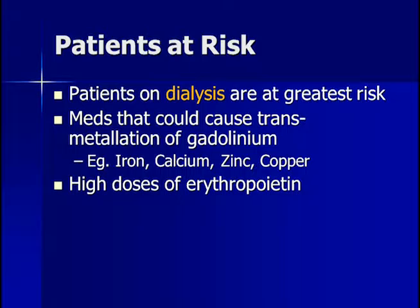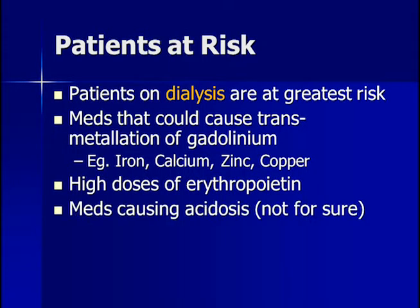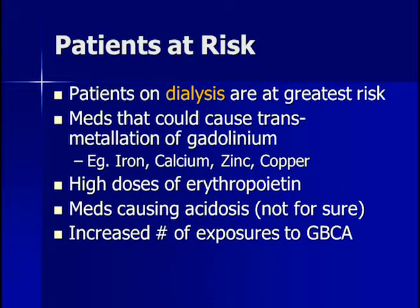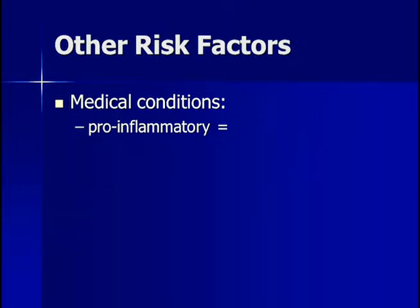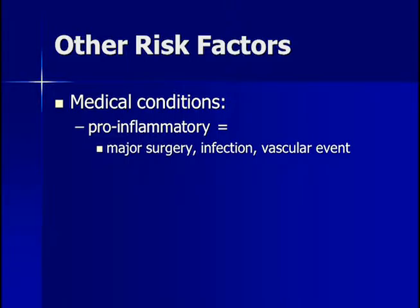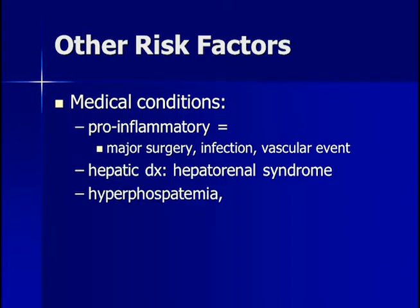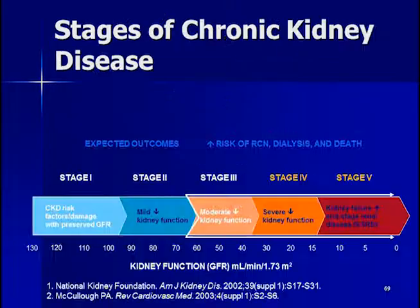Patients with high doses of erythropoietin, patients with acidosis, the number of exposures to gadolinium, and the dose given may increase dissociation of the chelate from gadolinium. Other risk factors for NSF include pro-inflammatory states such as recent surgery, infection, or vascular events such as heart attack or stroke, hepatorenal syndrome, hyperphosphatemia, and acidosis. Just as with CT, we are most concerned with patients in stages 3, 4, and 5 of chronic renal disease.